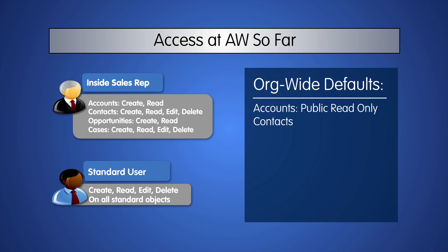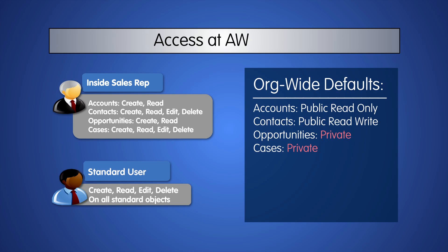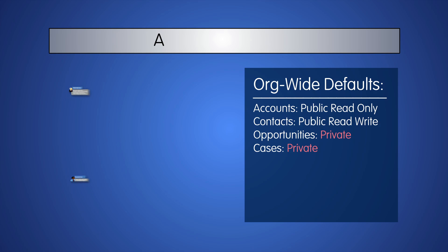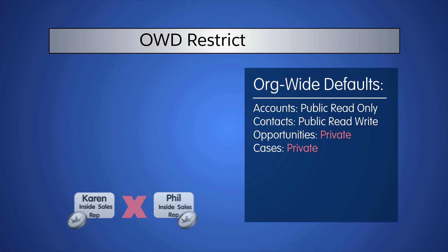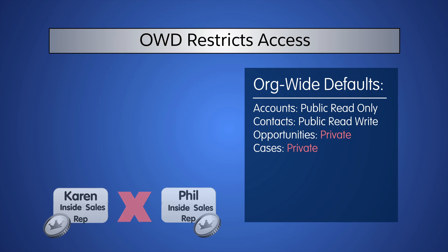We set our org-wide defaults, which determine the access users have to records they do not own. Since the org-wide defaults for opportunities are private, users cannot see each other's opportunities. Only the user who owns the record can view it, search for it, or see it in reports.